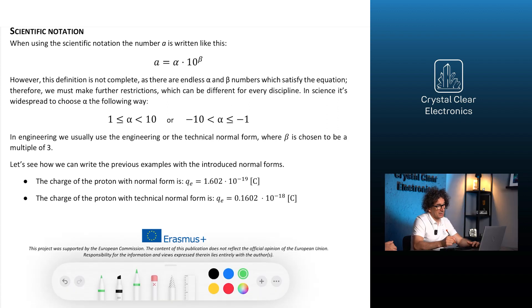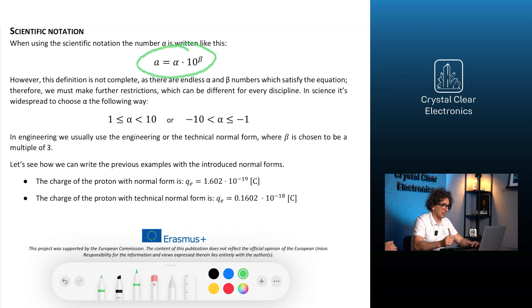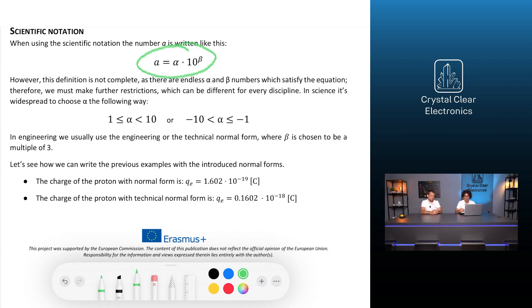When using the scientific notation, the number a is written like this: a equals alpha times 10 to the beta. However, this definition is not complete, as there are endless alpha and beta numbers, which satisfy the equation. Therefore, we must make further restrictions, which can be different for every discipline.